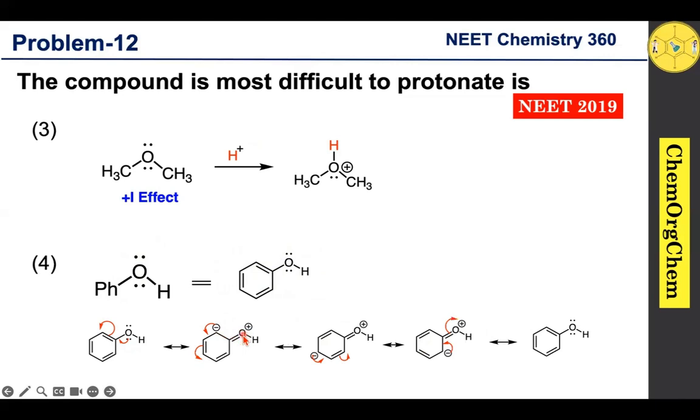Based on that, oxygen gets positive charge. So here also oxygen gets positive charge, here also oxygen gets positive charge. Based on that, the availability of lone pair of electron in oxygen is reduced. Therefore this phenolic oxygen does not attack easily the acid to produce corresponding protonated phenolic intermediate.